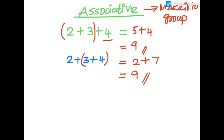This means that when you form any group, the associative property is satisfied. Here I am using addition, so this is called associative property satisfied under addition. If you move on to another example, add using the associative property: